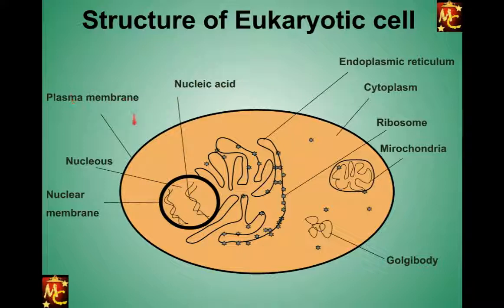Their DNA actually exists in a confined place called the nucleus. Inside the nucleus is nucleic acid, and the nucleus is surrounded by a membrane called the nuclear membrane. This membrane is quite similar to the plasma membrane — it is also a bilayer membrane.